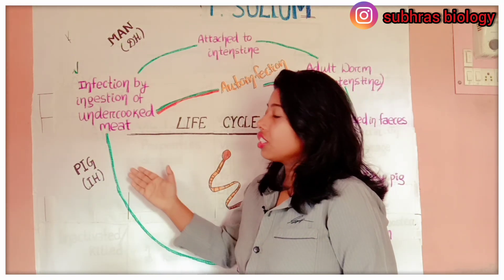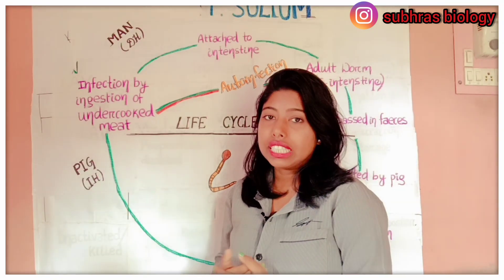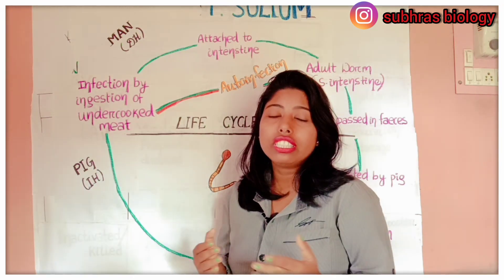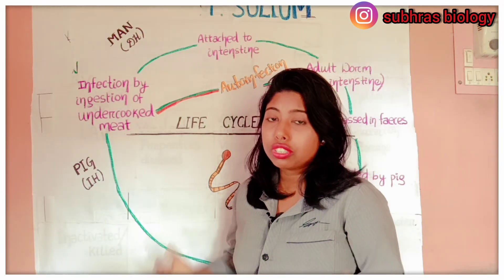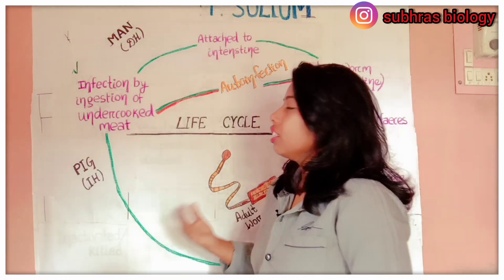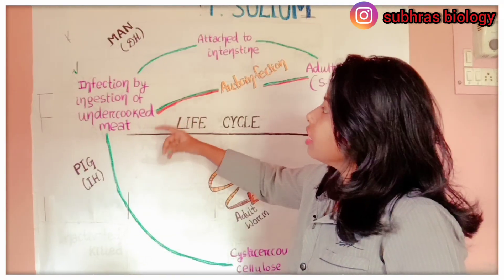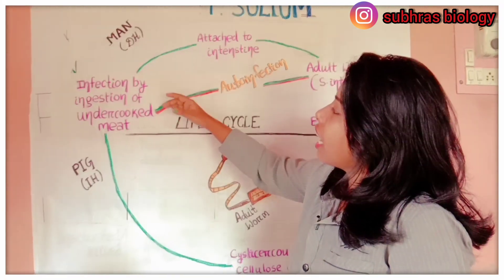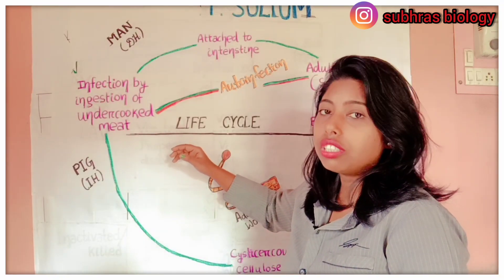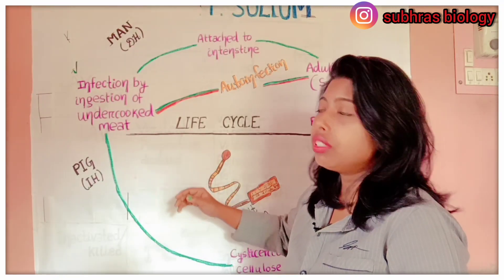First, infection occurs by ingestion of undercooked meat — when we eat undercooked meat of pig, we get the infection. So from there onwards we will start: when the human gets the infection through this pork tapeworm.